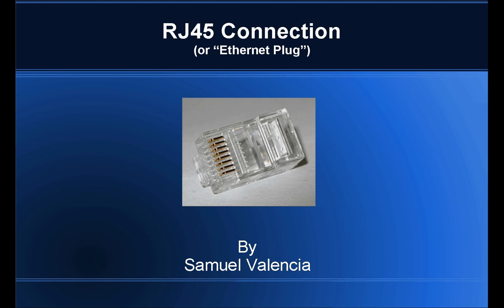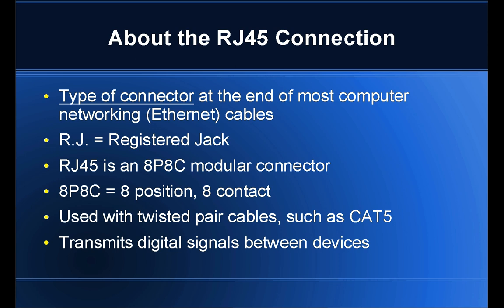The RJ45 connector, you'll see a picture of in the middle of our screen here, is nothing more than the plug at the end of an ethernet cable. It is an 8P, 8C modular connector. The 8P stands for 8 position and the 8C is 8 contact, and what this means is that there are basically 8 pins that dig into the 8 wires within the cable itself.